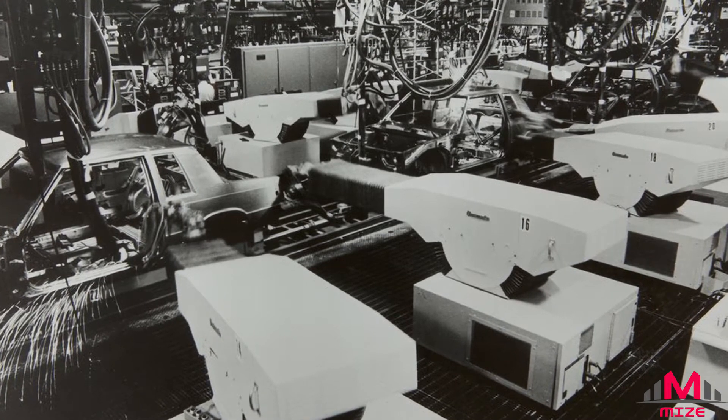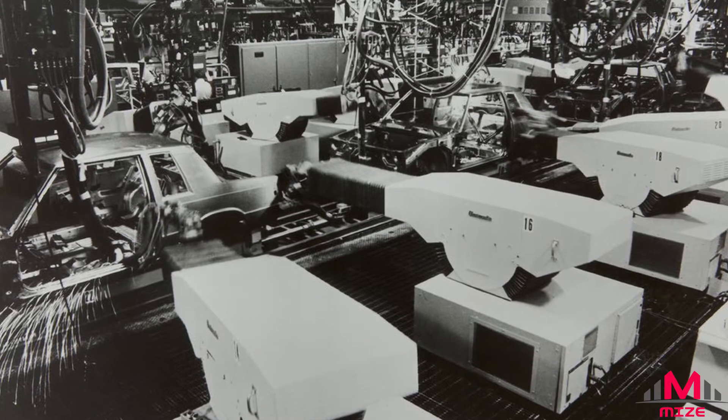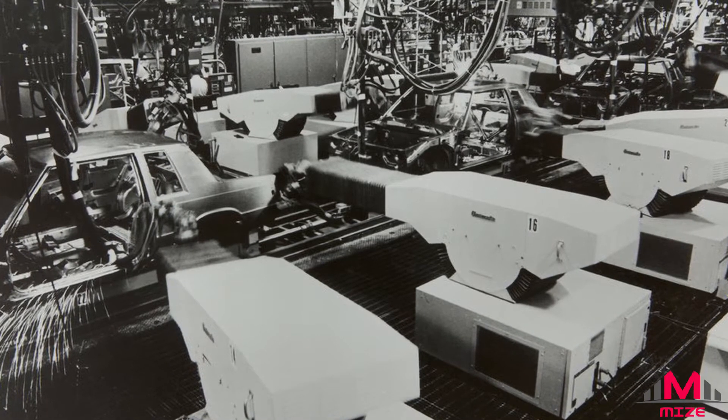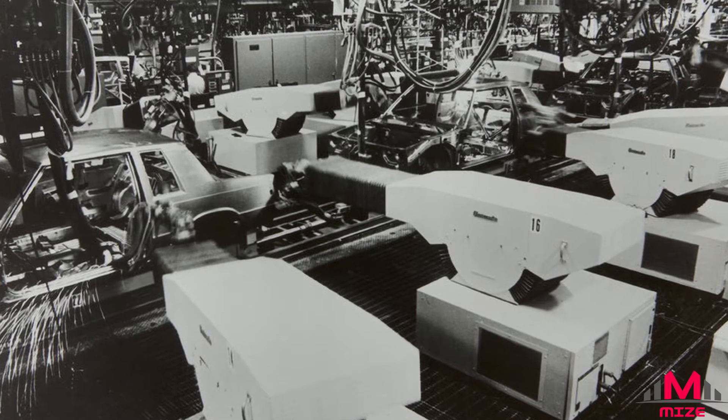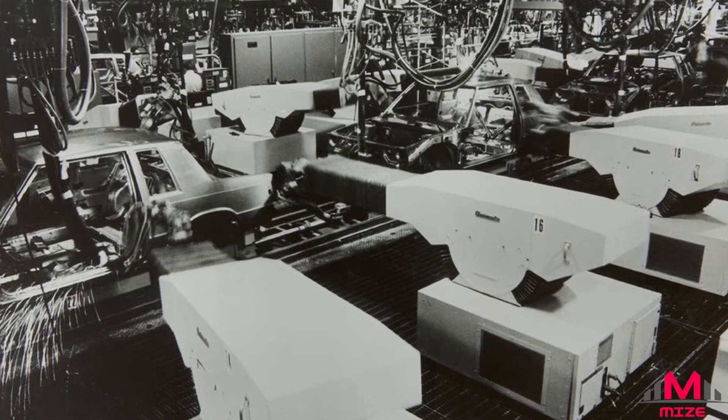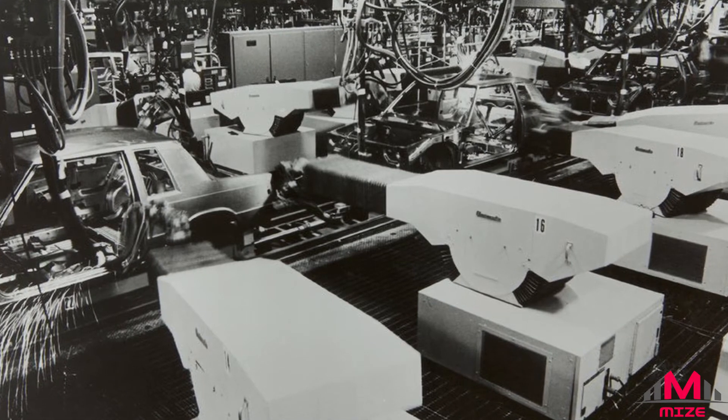When Unimate robots took over the job of welding car bodies in 1969, the GM plant in Ohio was able to build 110 cars an hour, twice as fast as any factory in the world at that time.